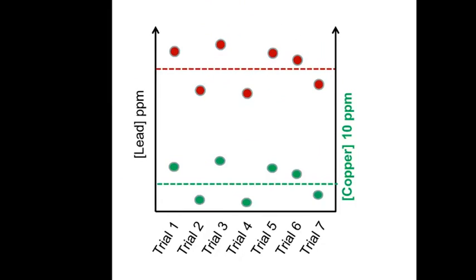And when you do that, you see that the same random errors that made your lead numbers a little high, also made the copper numbers a little high.